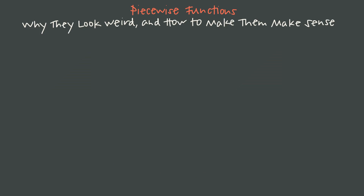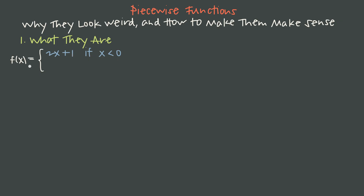We're going to cover everything about how to read them, graph them, and evaluate them so that we understand absolutely everything about piecewise functions. A piecewise function is just a regular function that's made up of different rules that define the function over different parts of the x-axis. So instead of one rule that applies to everything, like f(x) = 2x + 1, a piecewise function uses different equations depending on the value of x. Here, f(x) is defined by 2x + 1 whenever x is less than 0, but when x is greater than or equal to 0, negative x squared plus 3 defines the function. And this is important — this is still just one function. It simply lives in multiple pieces.